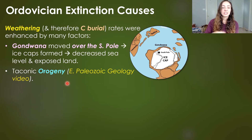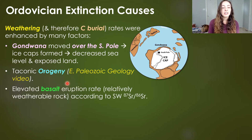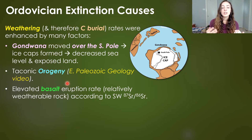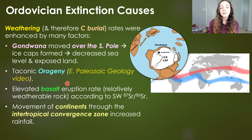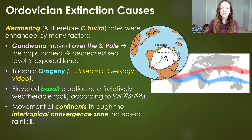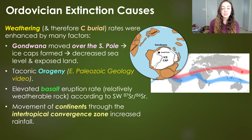The Taconic Orogeny was a mountain-building event that also contributed to weathering during this time. Elevated basalt eruption rates, according to strontium ratios at the time, would have also contributed to enhanced weathering because basalt is relatively weatherable. And movement of continents through the intertropical convergence zone, a zone where rainfall is greatly increased, would have also increased rainfall and therefore chemical weathering.